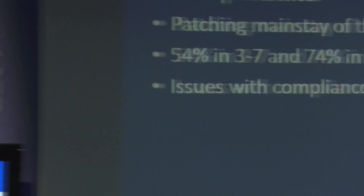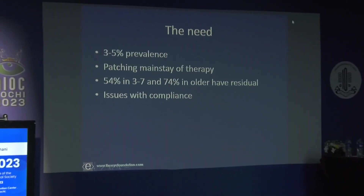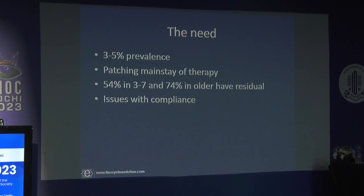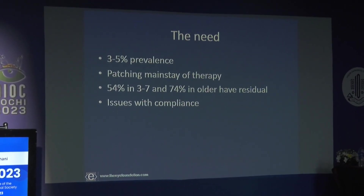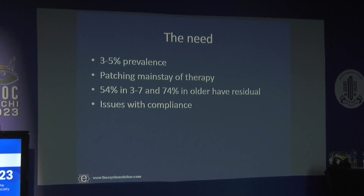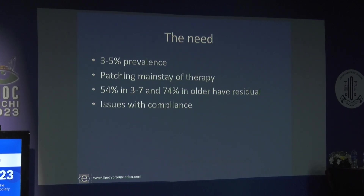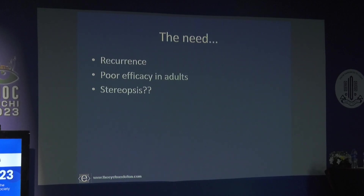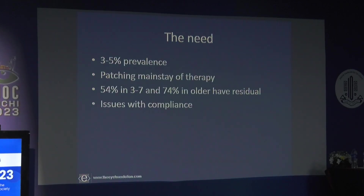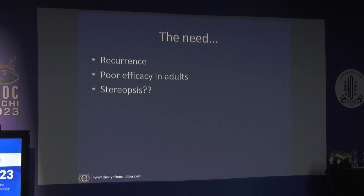Three to five percent of the general population is amblyopic, and patching has been the mainstay of therapy for over 200 years. Issues prompting interest in alternatives include compliance problems, and the fact that 54 percent of children aged 3–7 and 74 percent overall continue to have residual deficits in motion processing, visual acuity, or contrast sensitivity even after treatment. Patching is also not very effective in adults; up to age 17 it can be tried, but success rates are around 25 percent, and recurrence is possible.